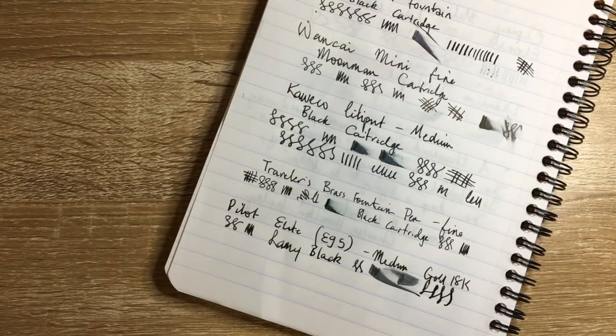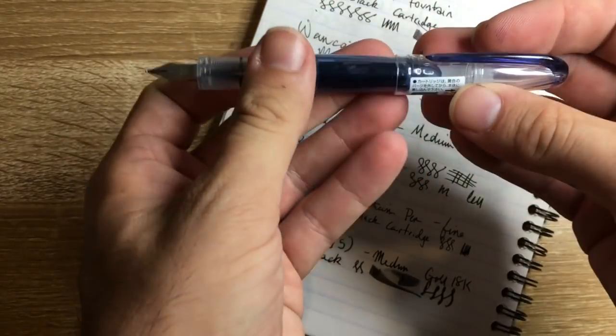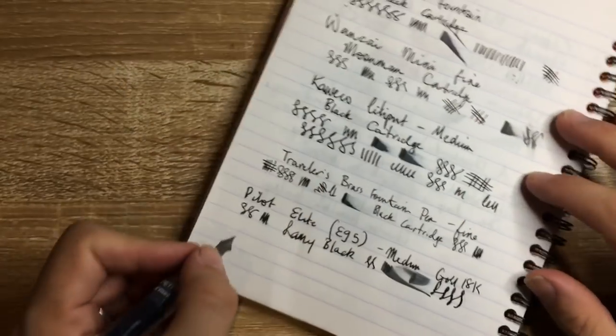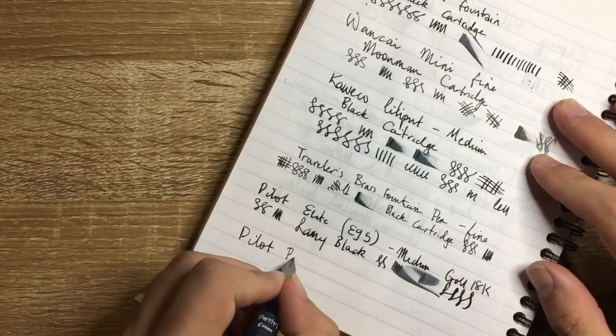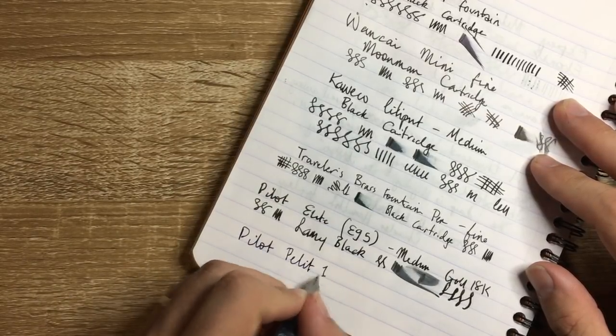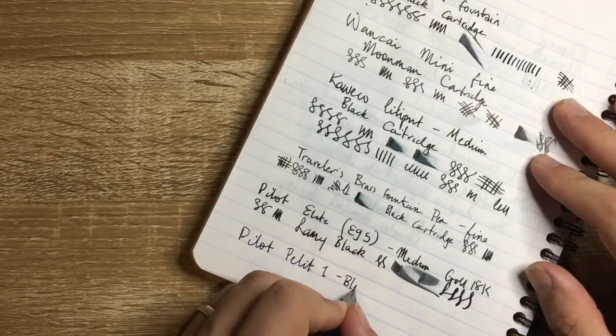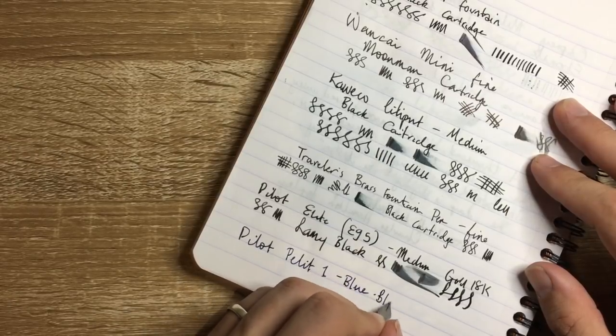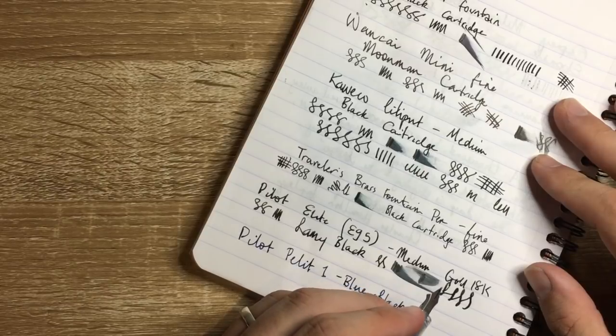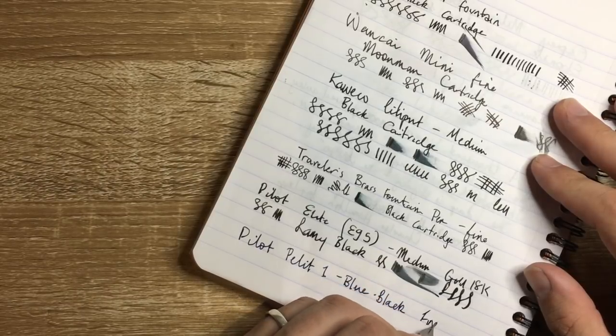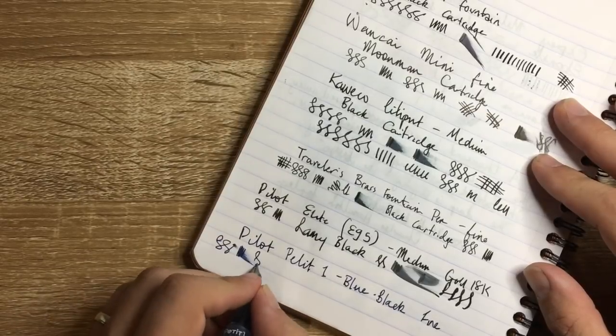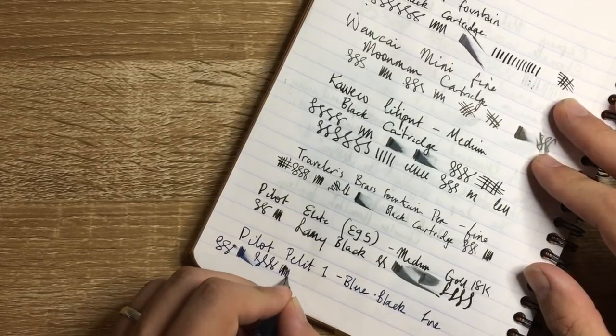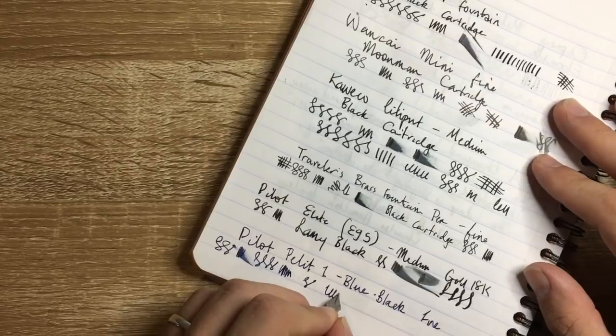And then my favorite, the Pilot Petit One. This is the, I said, the disposable. And there we go. First time. Blue black. And that's it. This is the blue black that comes with it. And, fine. So smooth nib, not super wet, but I also don't think the ink is super wet, but it's just a really lovely pen to write with. Simple, cheap, well, not necessarily cheap, but affordable and reliable.